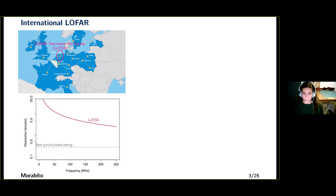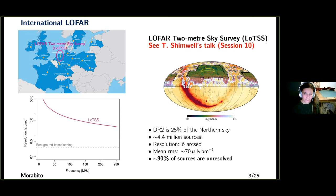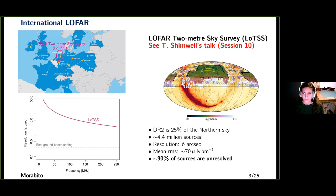If you use just the Dutch stations, which is what we do for the LOFAR 2-metre sky survey, you get about six arc second resolution at 150 MHz with the high-band antenna. We are conducting a survey of the northern sky with the Dutch stations — I encourage you to see Tim Schimel's talk in session 10. Data release 2 will cover about 25% of the northern sky with more than 4 million sources at six arc second resolution and an RMS of about 70 micro-Jansky. Almost 90% of the sources in LoTSS at six arc seconds are unresolved, which means spectral modeling results on any of those sources are not going to be physically meaningful.